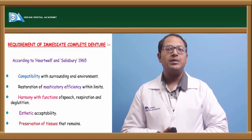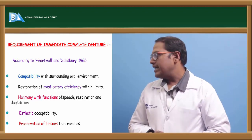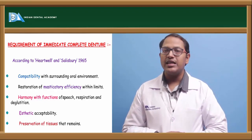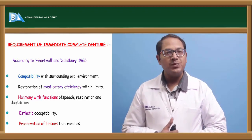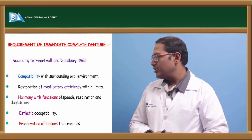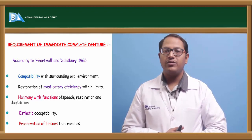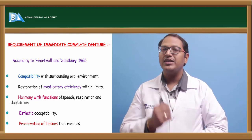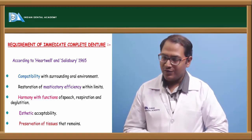Now, requirements of the immediate complete dentures. According to Hartwell and Salzbergi, compatibility of the surrounding tissue is important. Masticatory efficiency increases in that case. The harmony with the function of speech and the relation of the muscles with the denture also gets adapted soon. Aesthetic compatibility of course, and the most important thing according to D-Man was preservation — the structures present are preserved and the resorption rate is decreased when you place an immediate denture after extraction.